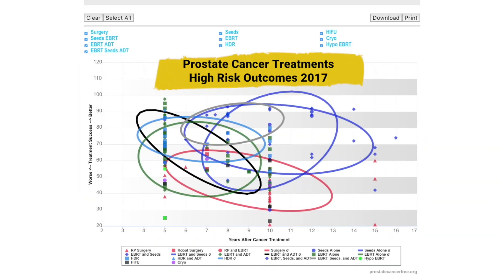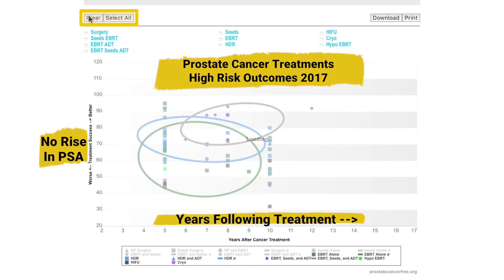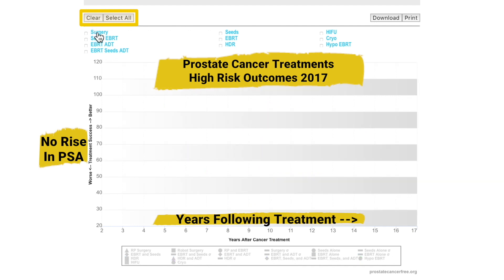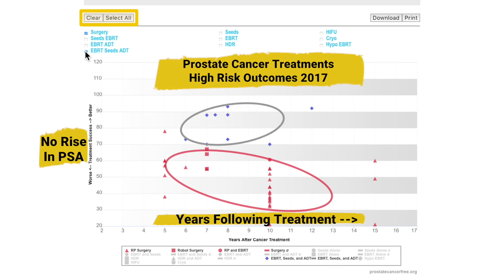When the interactive graph is first displayed, all treatment results are plotted using PSA as the measure of treatment success. Patients are tested in yearly intervals, so the bottom of the chart is time in years. On the top left of the graph are options to clear or select all treatments. Clearing the graph allows you to focus on one or more treatments. To learn more about a treatment, hover over the name. Select the treatment by checking the selection box next to the treatment name.